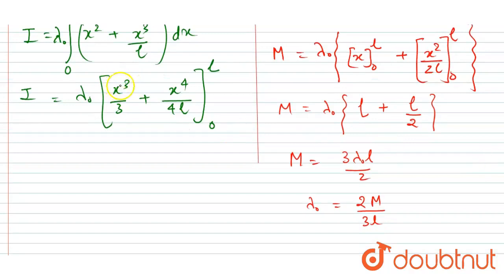So I will put the limit here, which equals the moment of inertia. Now just put the value of X. If I put the value of X equals to L, then I will get L cube by 3 plus L to the power 4 by 4L. This will get cancelled out and you will get L cube by 4 times lambda naught.